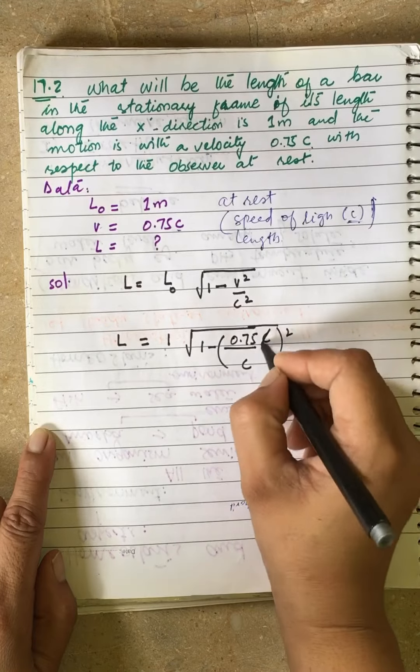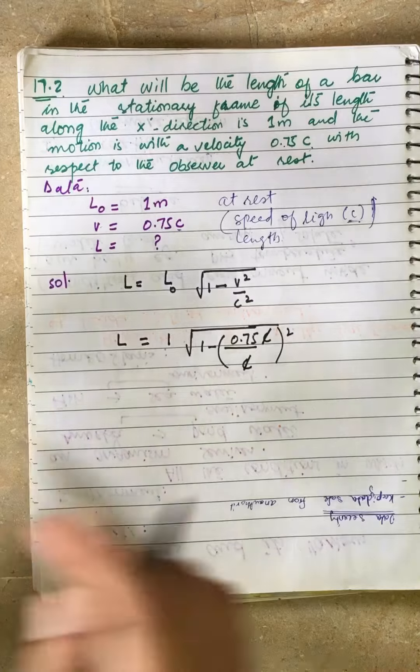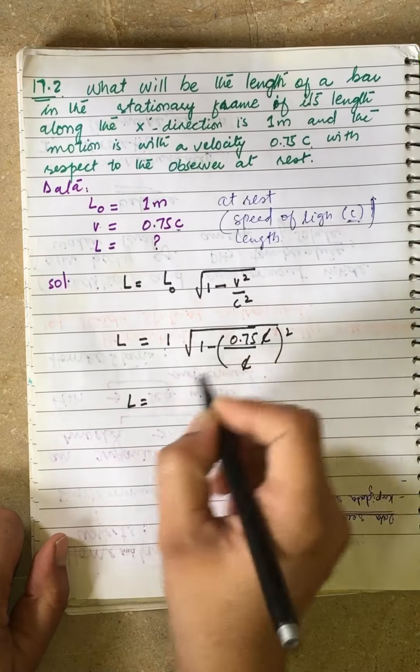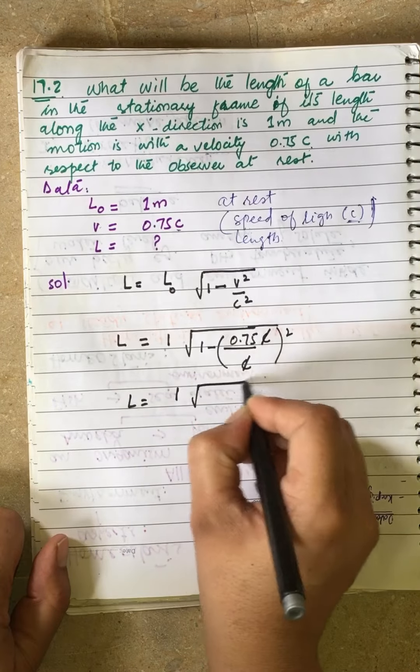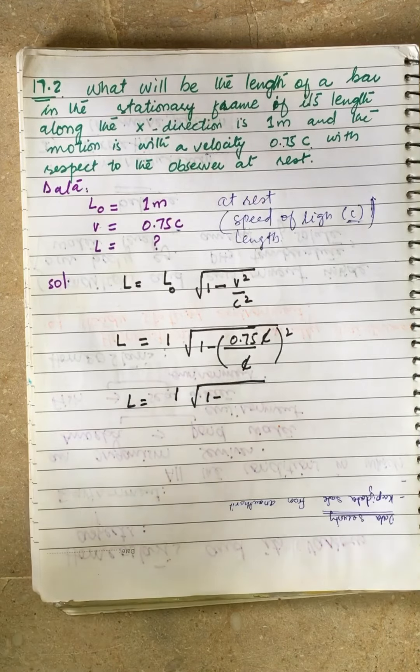Then 0.75 squared gives us L equals 1 under root 1 minus 0.75 squared, which is 0.5625.